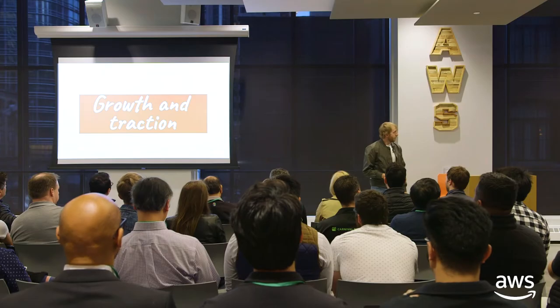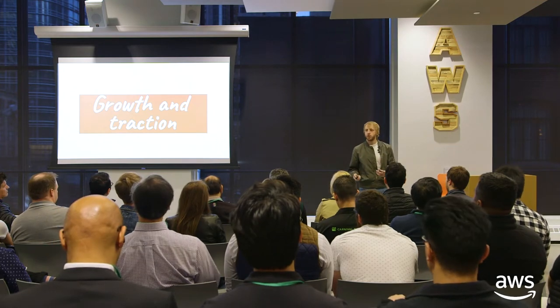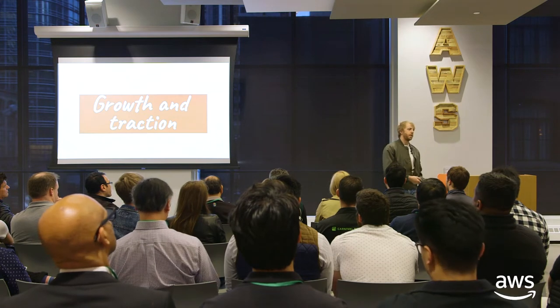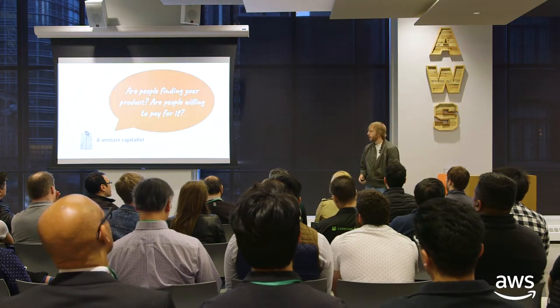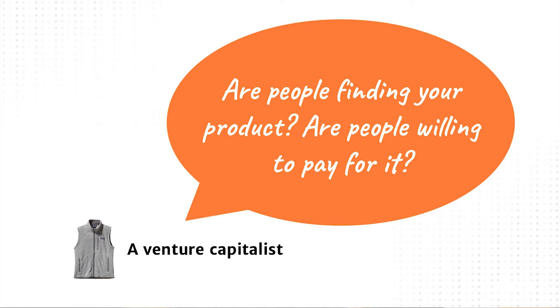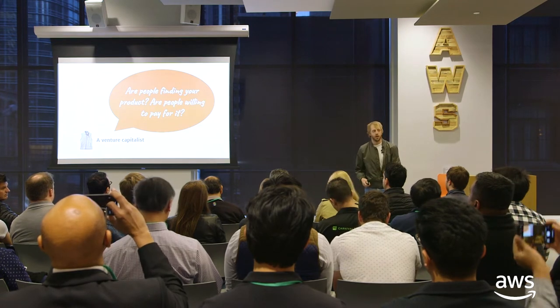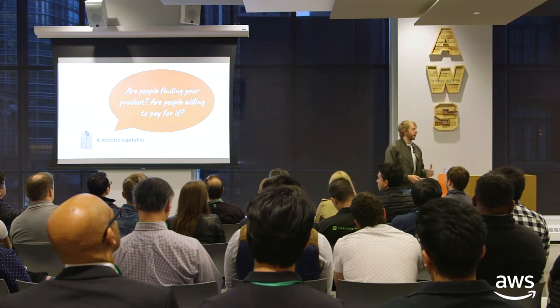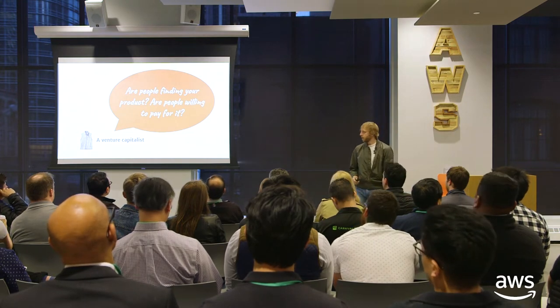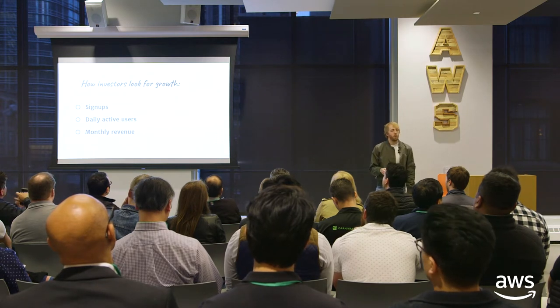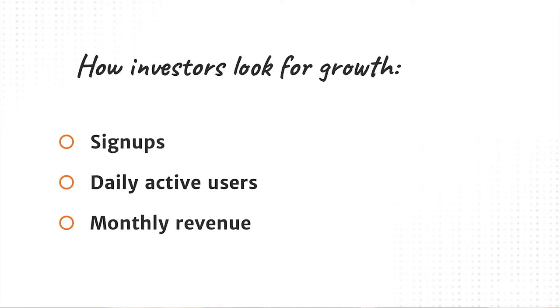The first part I want to talk about is growth and traction. This is the first part of your metrics-driven story for how to tell investors about your company. What investors are really asking here is: are people finding your product? Are people willing to pay for it? Are they wanting to sign up? Is there something compelling that people want to come to and actually use? There are three key metrics I'd point out: signups, daily active users, and monthly revenue. These all seem pretty straightforward, but they're often a little less straightforward than they seem.